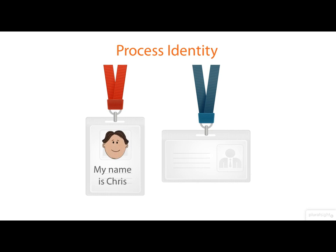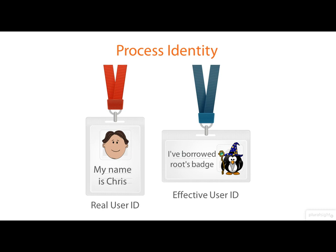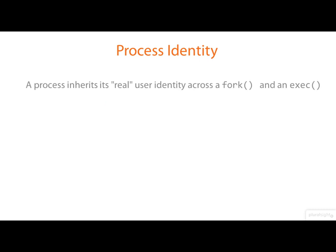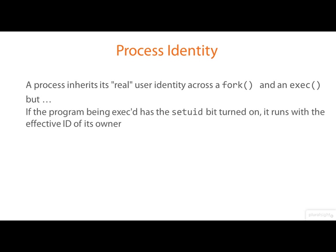As well as knowing what user a process is running on behalf of, it can also under certain circumstances borrow the identity of another account. So we have the concepts of real and effective user identity. Normally a process inherits its identity from its parent and it stays the same across an exec. However, if the program being exec'd has the set user ID bit turned on, it runs with the effective ID of its owner.